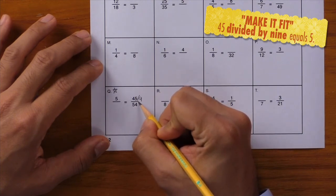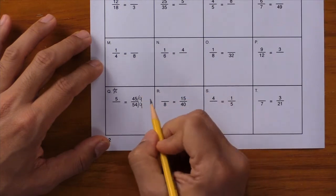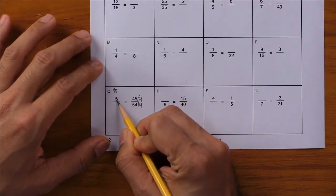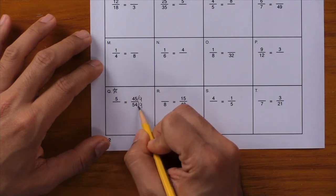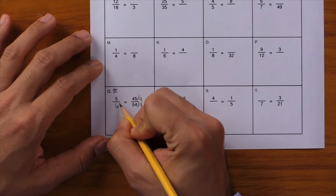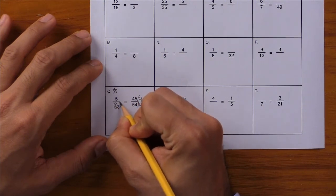And write down divide by 9 in the denominator as well. 45 divided by 9 gives you 5, which is right there. 54 divided by 9 gives you 6. So write it down and circle your answer.